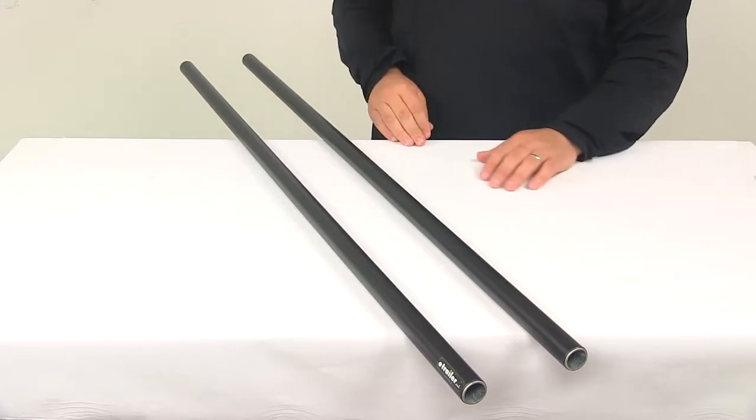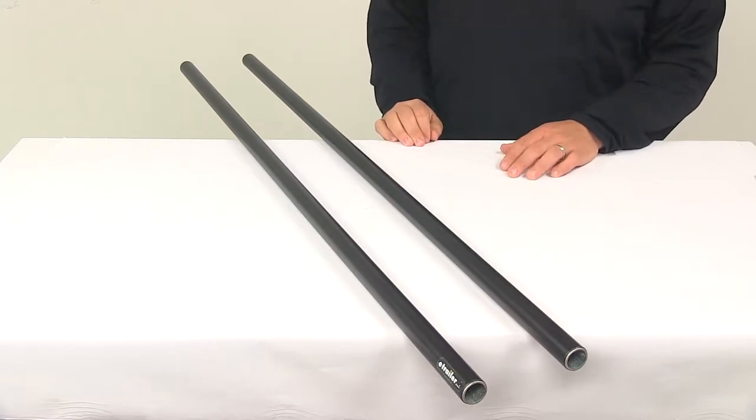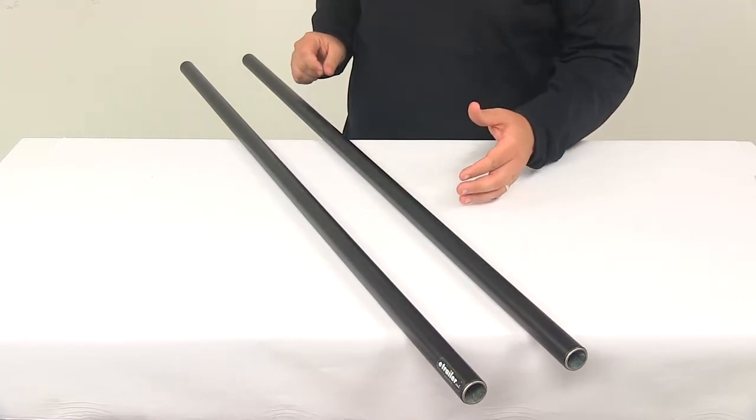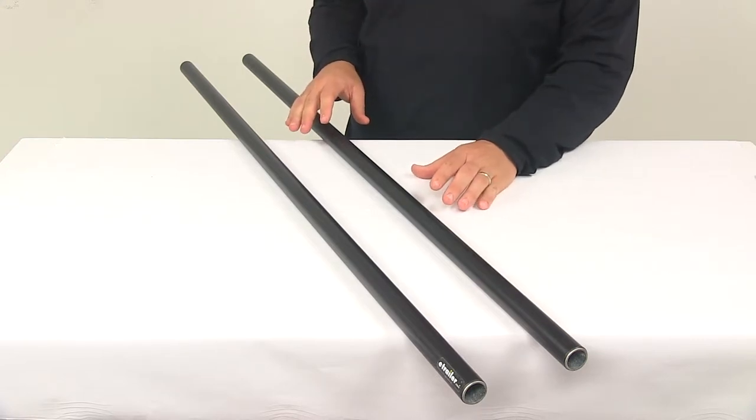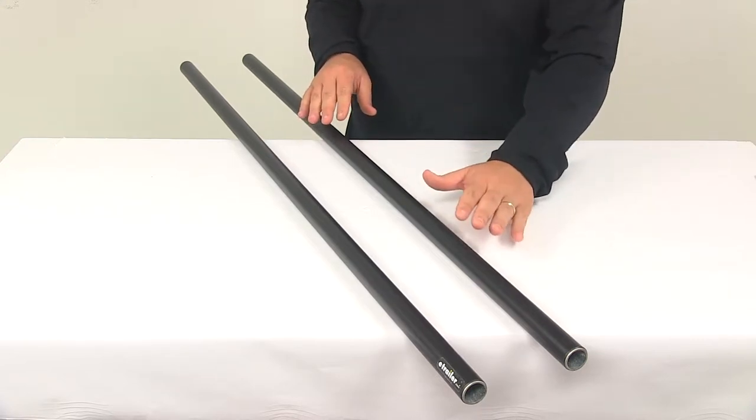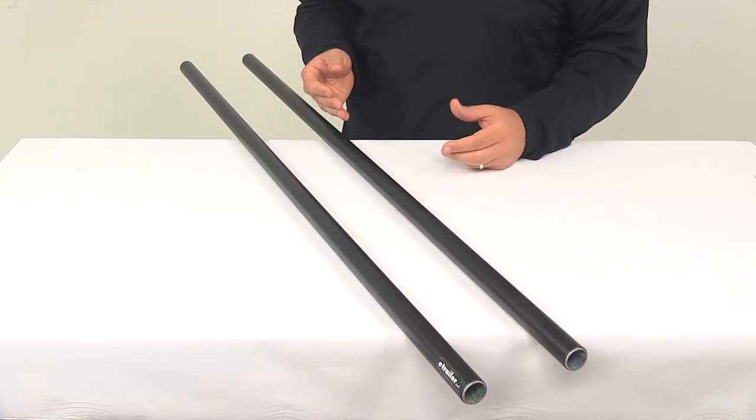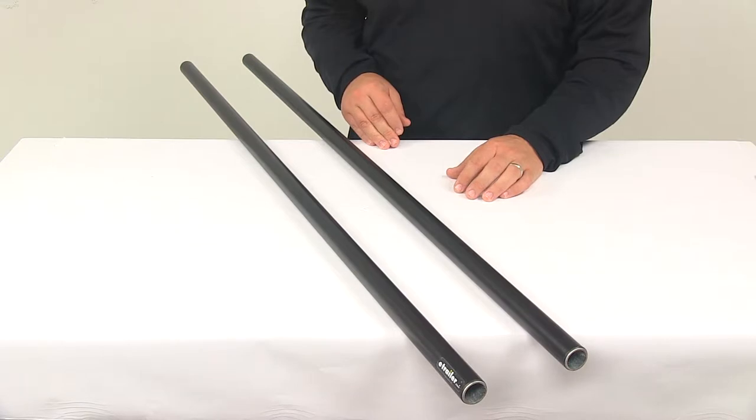Today we're going to be taking a look at the Yakima round crossbars for Yakima roof rack systems. These are multi-purpose crossbars that supply the backbone for your aftermarket roof rack system. You'll notice that they're a round design that's going to fit all Yakima towers. Towers are sold separately and are available here at eTrailer.com.